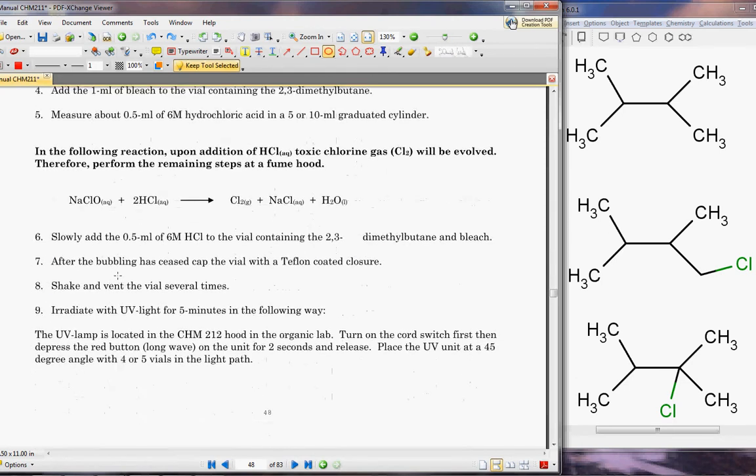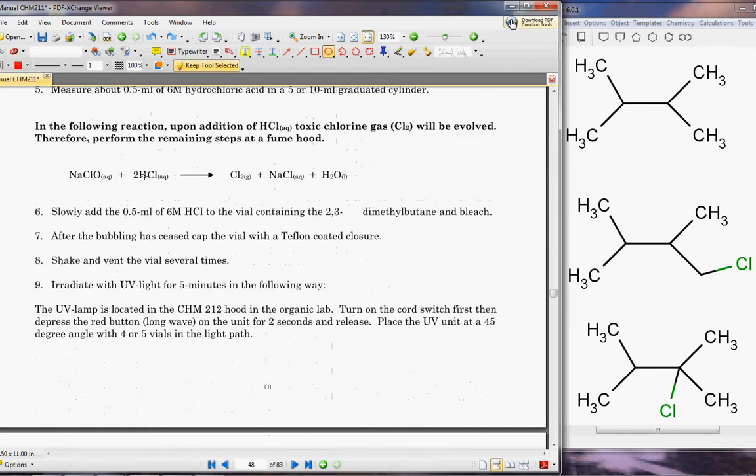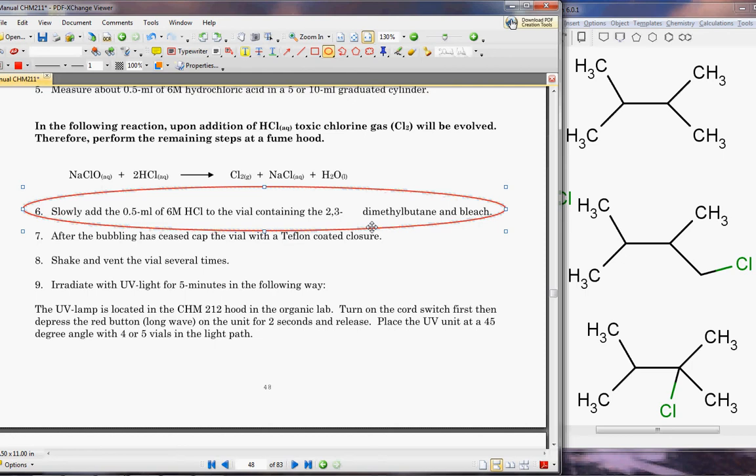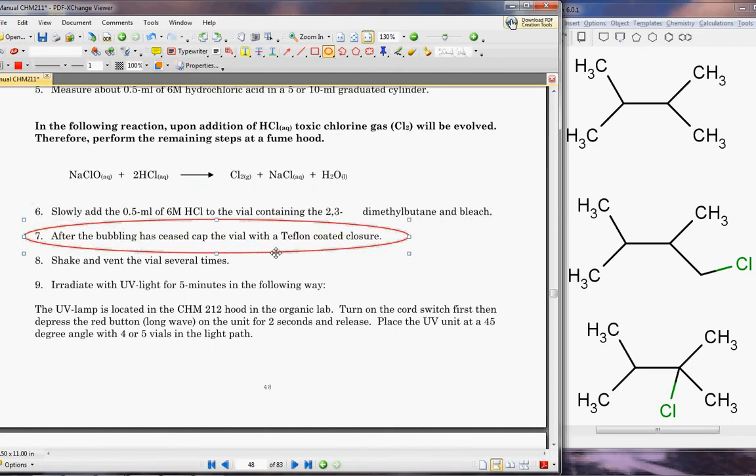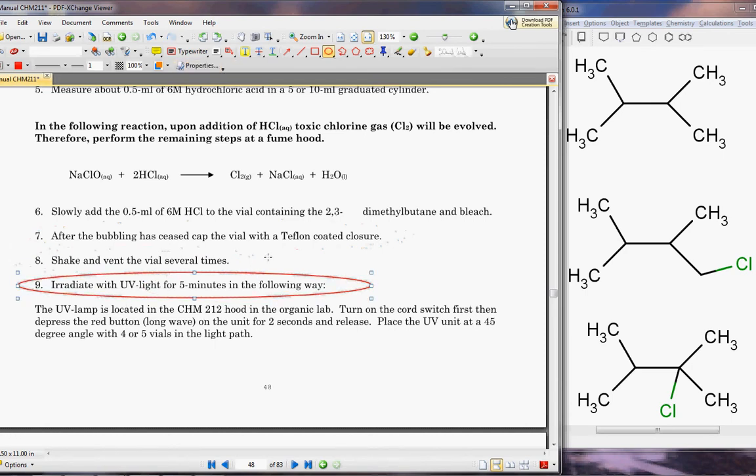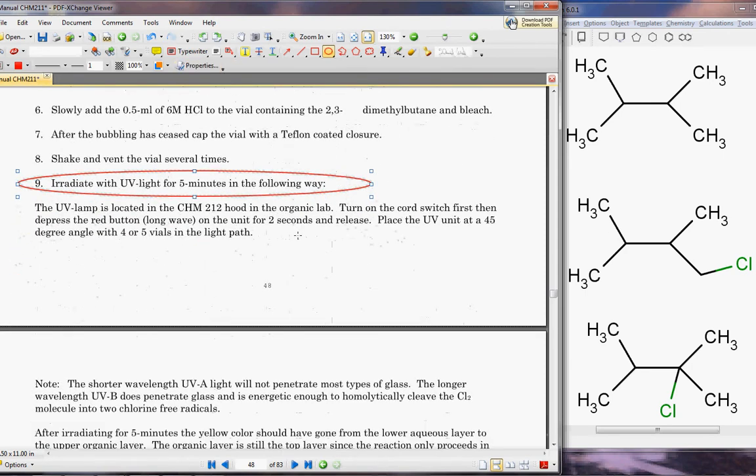Then we're going to add hydrochloric acid to our cylinder. Up until then, you can do this outside of the hood. After this, this is when we're going to produce the chlorine gas, so you really want to put this under the hood. Then we're going to slowly add the hydrochloric acid to the dimethylbutane and bleach. You're going to see bubbling, and once it stops, shake and vent several times. Then initiate the reaction with UV light.